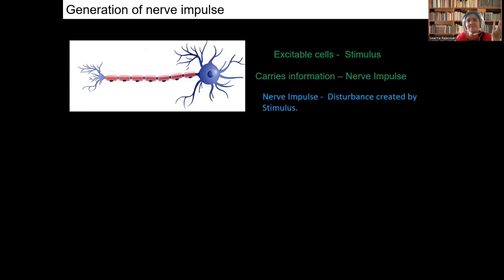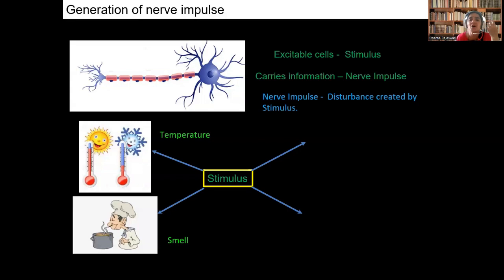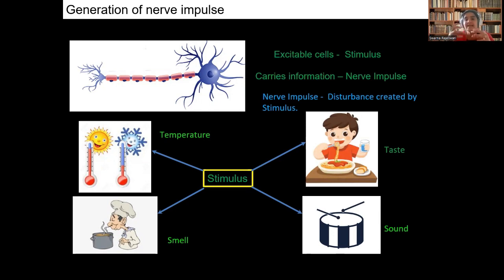The stimulus is of different types. It may be the increase in temperature, or it may be the thing which we smell, or the thing which we eat, or the sound which we hear, the hotness which we taste — any change in the environment which is observed, we call it as stimulus. It means it is causing a detectable change in a cell or a tissue.